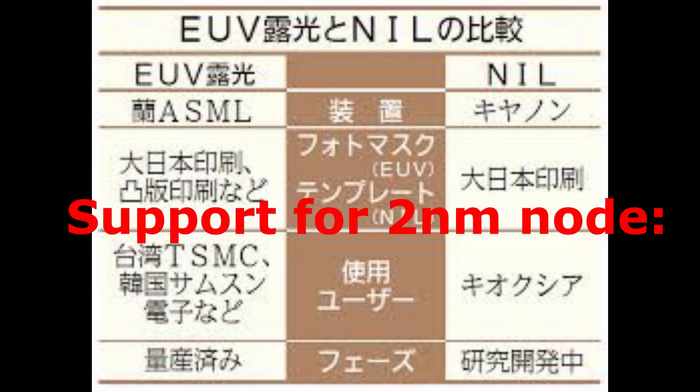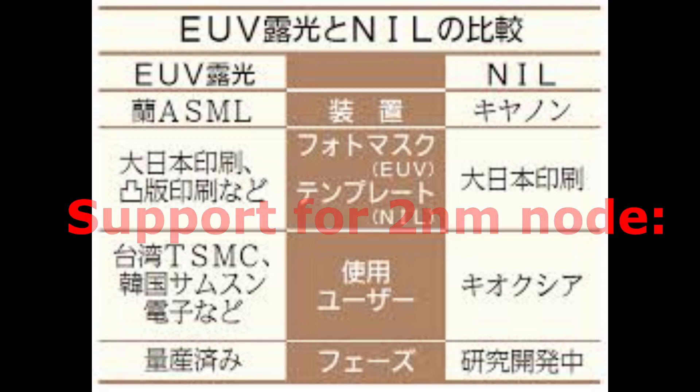Currently, it is possible to form patterns at the 5nm node with a minimum line width of 14nm, which is at the cutting-edge logic semiconductor manufacturing level. In the future, by improving the mask, the system will be able to support the 2nm node with a minimum line width of 10nm.